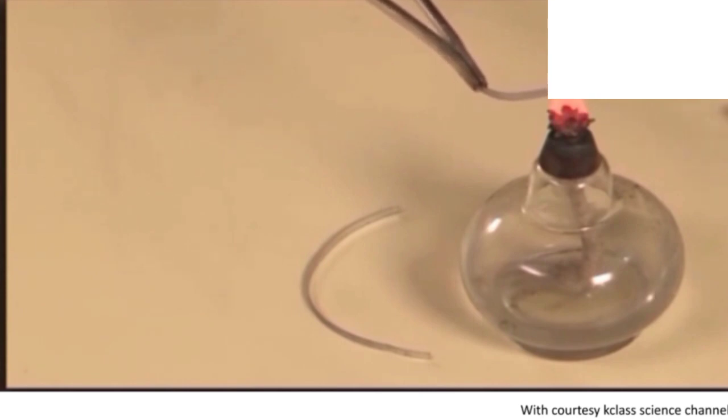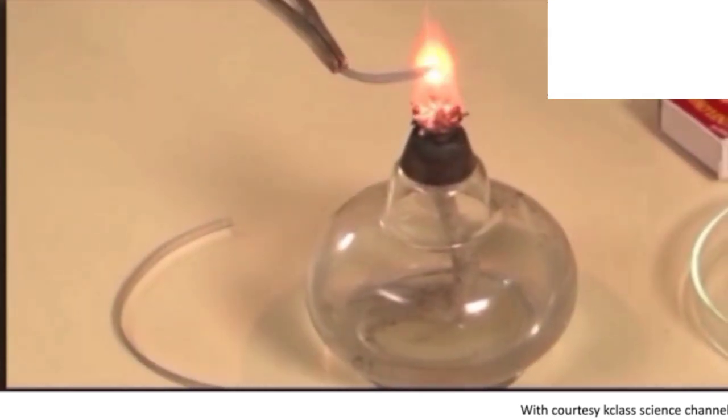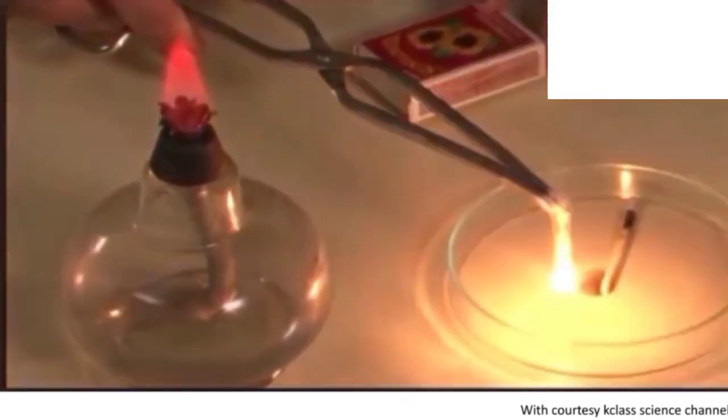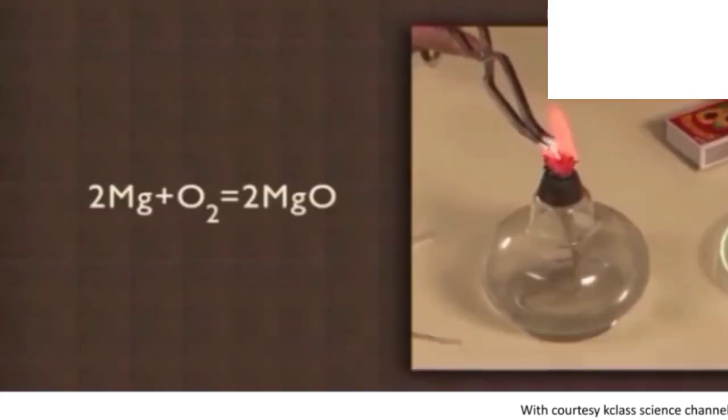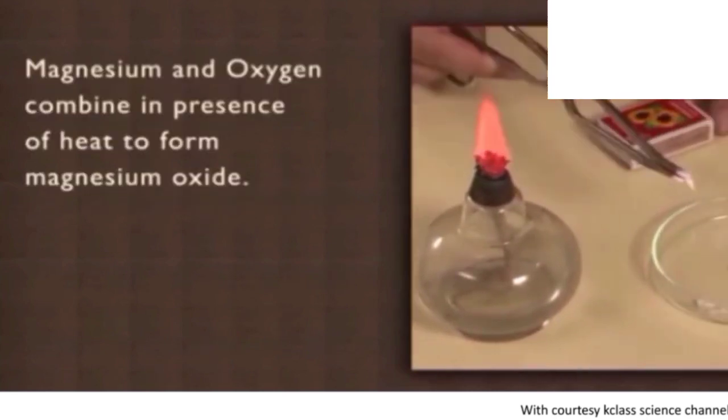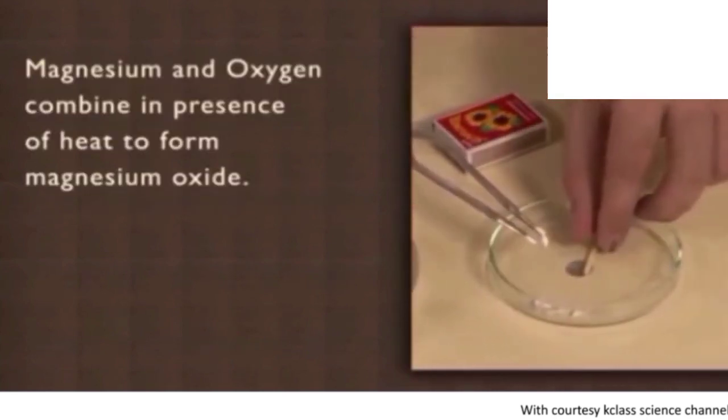Hold the magnesium wire between the tongs and burn it using spirit lamp. We see a dazzling light and a white powder. Collect the white powder in a dish. This white powder, which we see, is magnesium oxide. Magnesium and oxygen combine in presence of heat to form magnesium oxide. And this is an example of combination reaction.